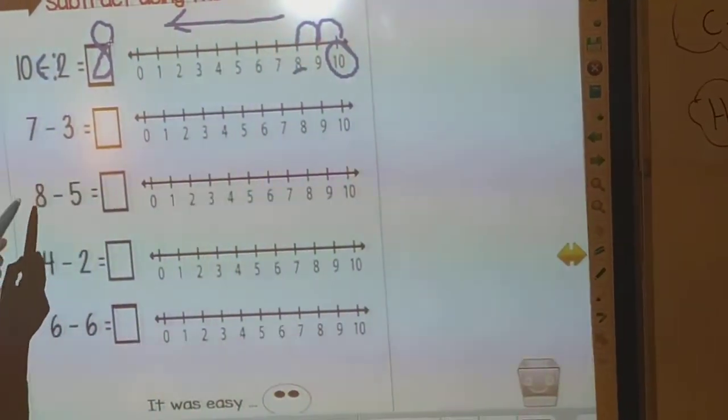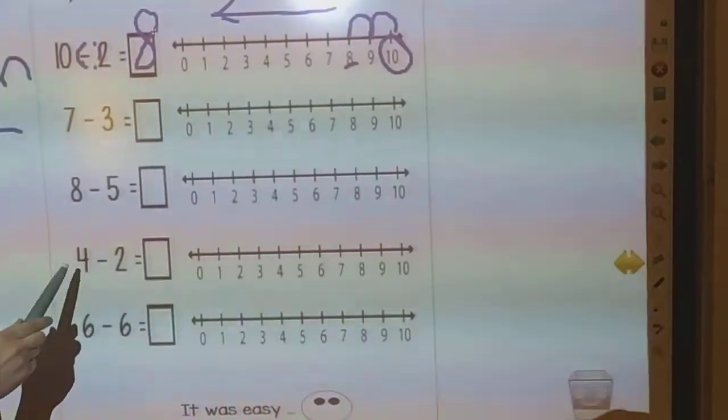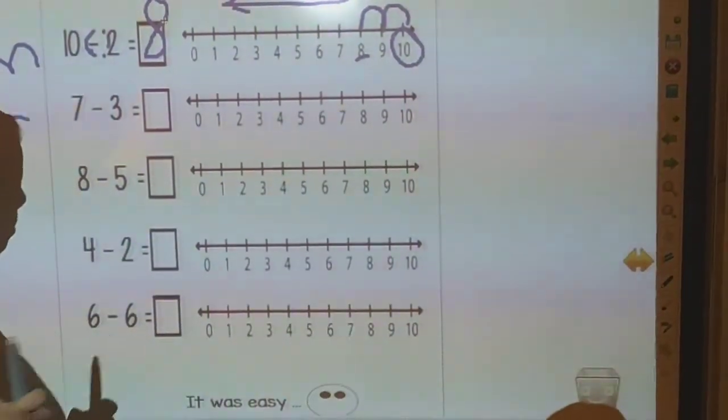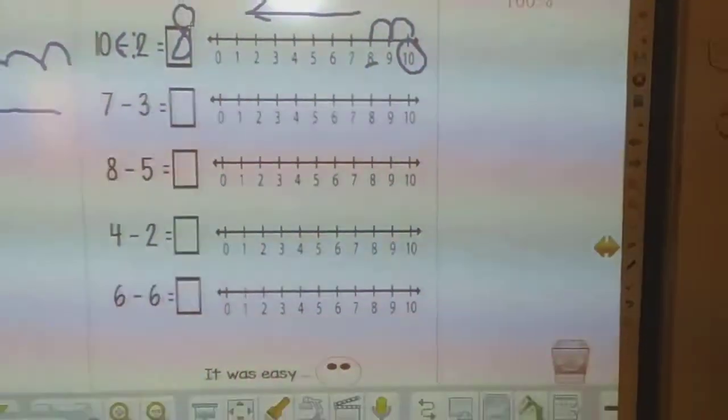Seven minus three. Eight minus five. Four minus two. And six minus six.